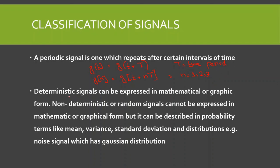Next are deterministic and random signals. Deterministic signals can be expressed in mathematical or graphical form. For example, a sine wave can be expressed both mathematically and graphically, so it is an example of a deterministic signal.